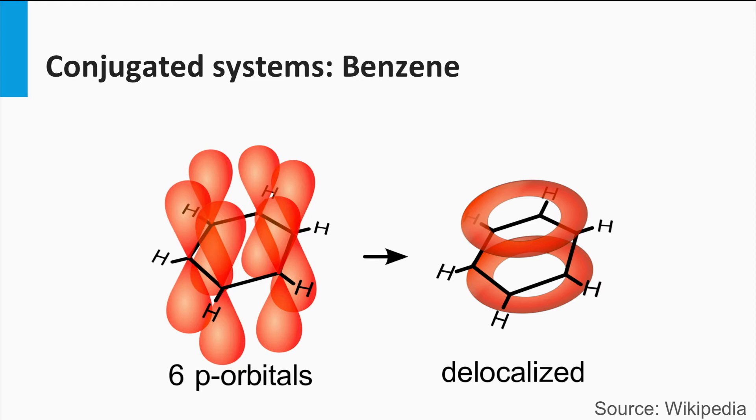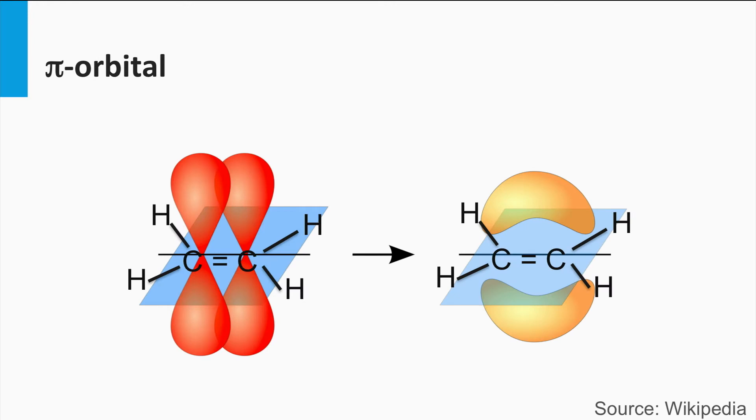A methane molecule, which is tetrahedrally coordinated, has four equivalent sp3 hybrid bonds with a bond angle of 109 degrees, as we discussed in week 2.